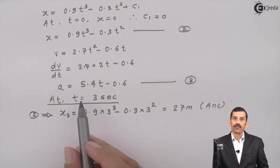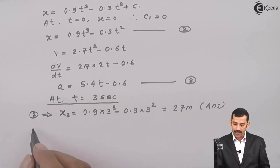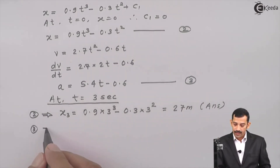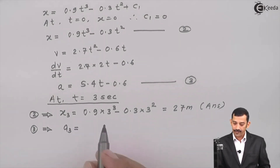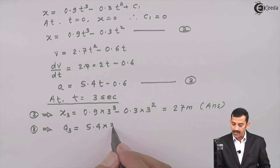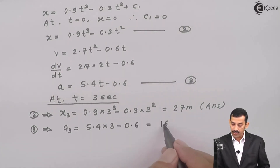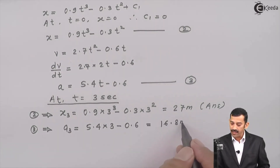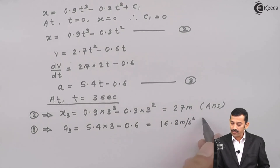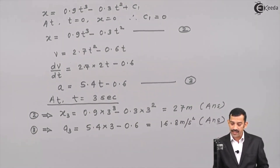Similarly, substituting t = 3 seconds into Equation 3 for acceleration: a₃ = 5.4 × 3 − 0.6 = 16.2 − 0.6 = 16.8 meters per second squared. You are now getting both answers: the position and acceleration at t = 3 seconds. Thank you.